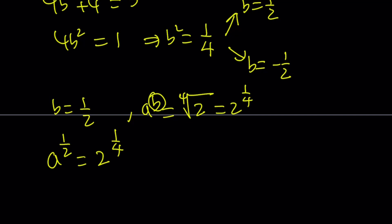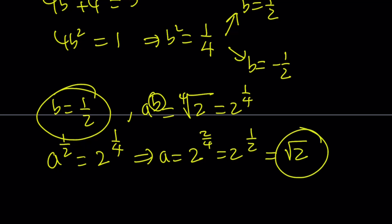This is the square root. So we can basically square both sides. And from here, we get a equals 2 to the power 2 fourths, which is 2 to the power 1 half, which can be written as square root of 2. So if b is equal to 1 half, then a is equal to square root of 2.